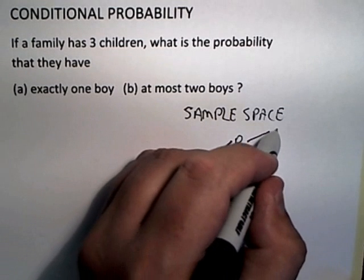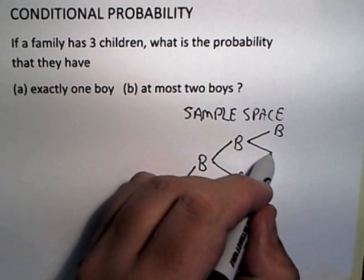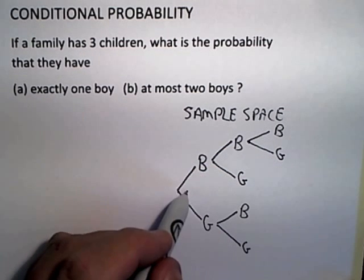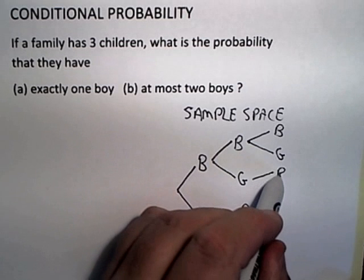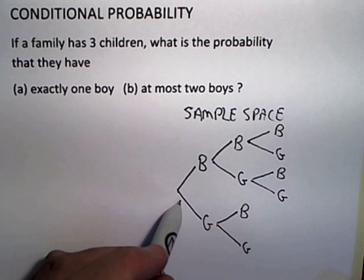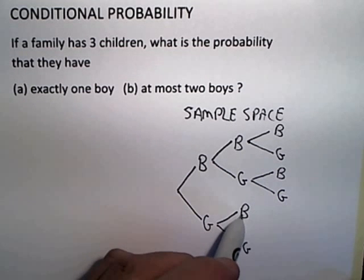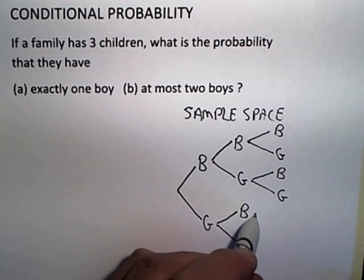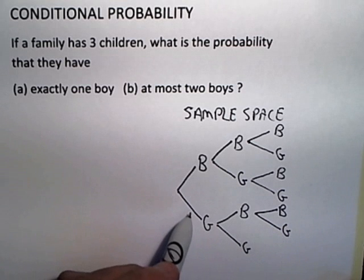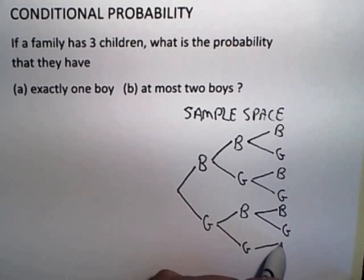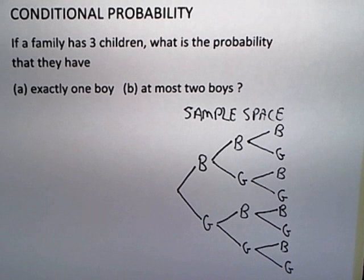If the first two children were boys, the third child could still either be a boy or a girl. If the first child were a boy and the second child were a girl, the third child could still be either a boy or a girl. If the first child were a girl and the second child were a boy, the third child could still either be a boy or a girl. And finally, if the first two children were girls, the third child could still either be a boy or a girl. So this tree diagram allows us to see very nicely what our sample space is.